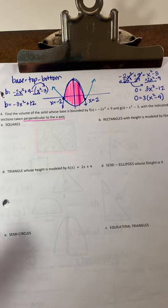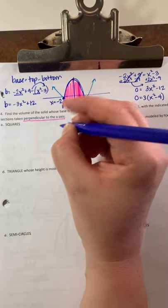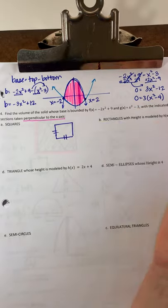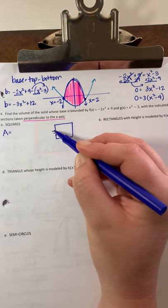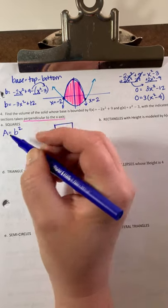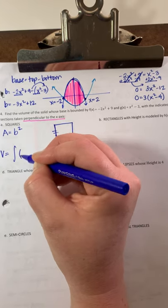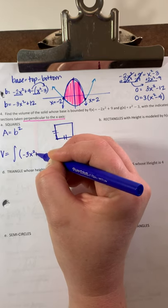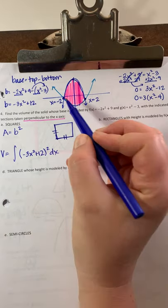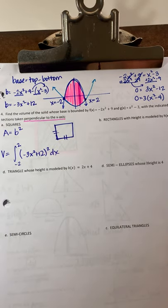For square cross-sections, all sides match, so area equals base squared — base times base. To get volume from area, integrate, so it's the integral of negative 3x squared plus 12, squared, dx. The endpoints follow the region's bounds, which are negative 2 to 2.